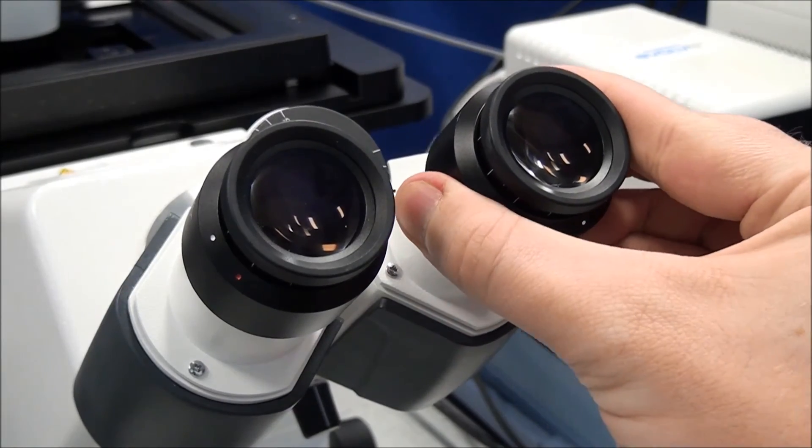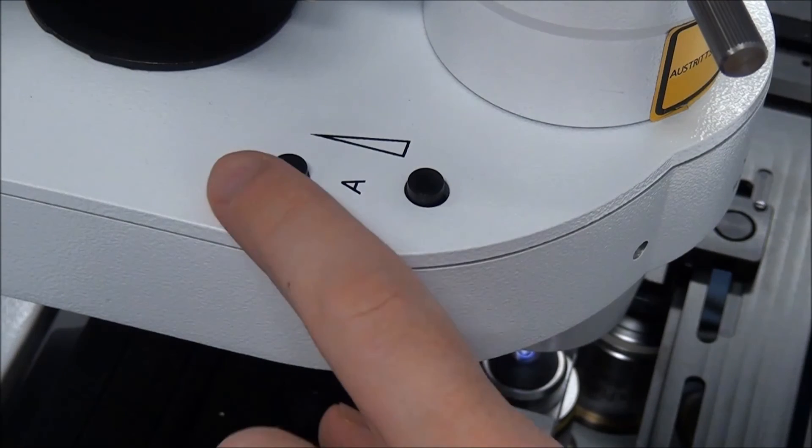Remove one eyepiece. While looking down the binocular tube, close the aperture diaphragm, located on the condenser, to about two-thirds the size of the illuminated view. Replace the eyepiece when complete.